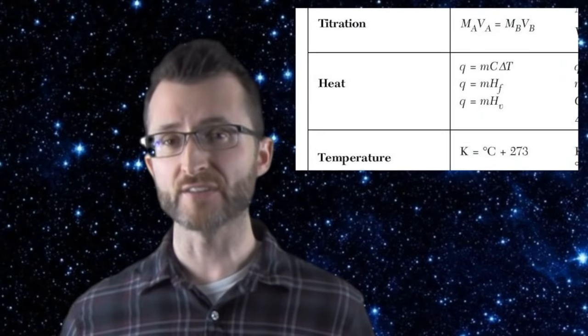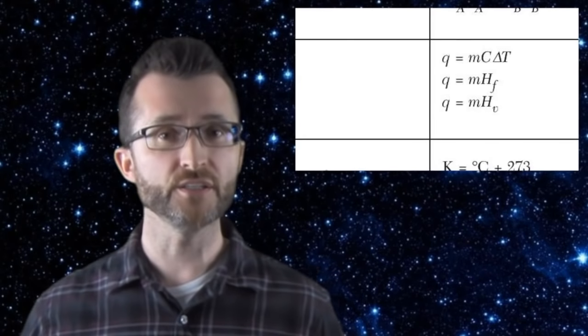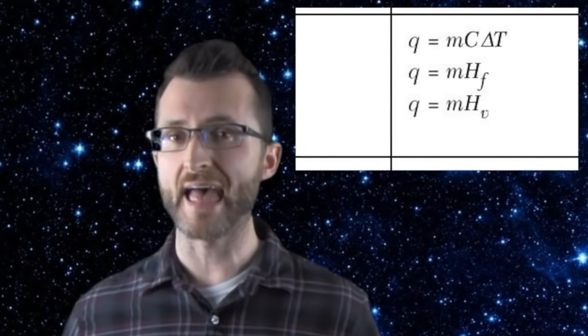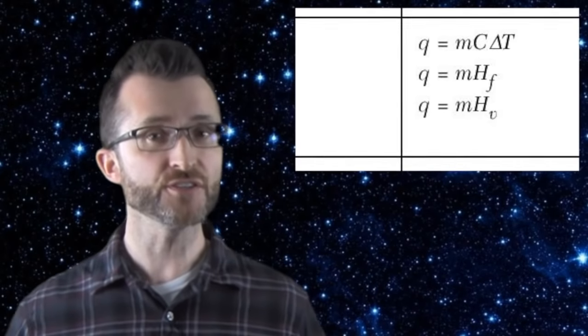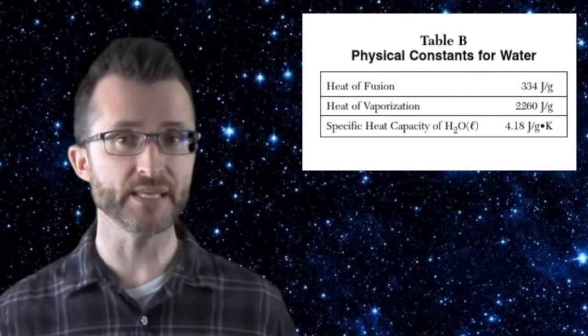Whenever there's a phase change, however, we're going to use a different set of formulas. For melting or freezing, we're going to use the formula Q equals NHF. The heat of fusion value for water can also be found on table B. If we have vaporization or condensation occurring, we're going to use the Q equals NHV formula. And again, the HV value is on table B for water.